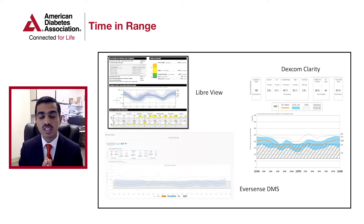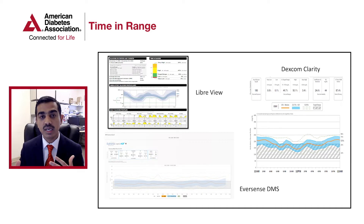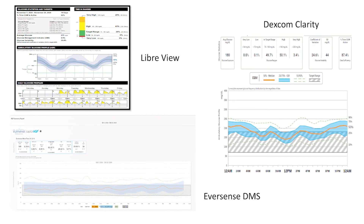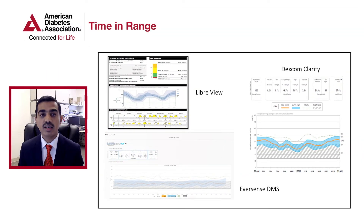You can see here on the screen three different AGP screenshots taken from three different CGM systems. On the top left upper panel is the LibreView from the Abbott FreeStyle Libre. On the right side is the Dexcom Clarity from the Dexcom G6. And at the bottom is the Eversense DMS taken from the Eversense Senseonics CGM. Nowadays, all these glucose meters and CGMs have a standardized way of reporting glucose data through the AGP.